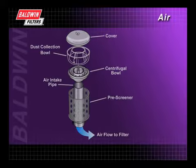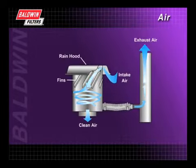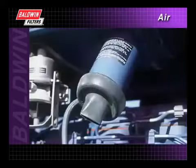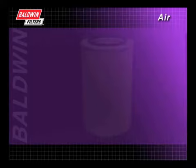Pre-cleaners can remove eighty to ninety percent of airborne contamination before it reaches the filter. The most common type uses stationary fins that swirl the air, causing heavier particles to separate out and collect in a trap, where they are removed by a dust ejector valve or other means. While pre-cleaners are very helpful, they can't trap all of the dirt.